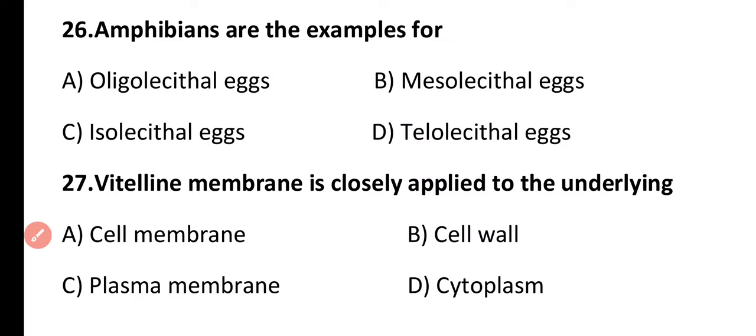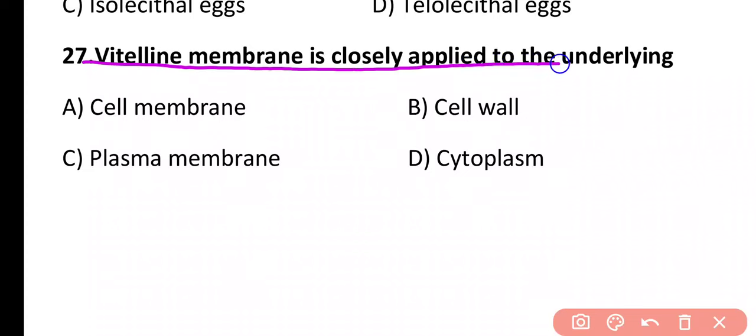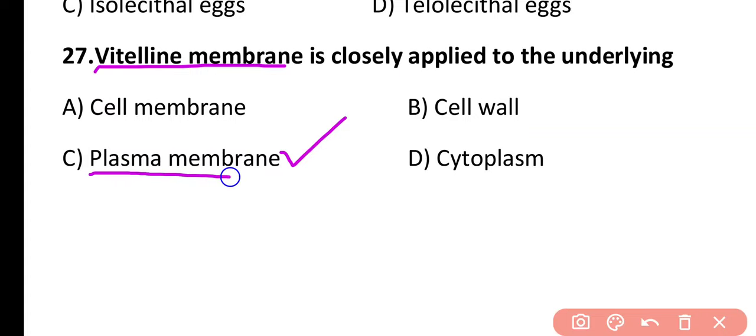Question 27. The vitelline membrane is closely applied to the underlying cell membrane, cell wall, plasma membrane, or cytoplasm? The correct answer is option C. The vitelline membrane is a primary egg membrane that is present outside the plasma membrane of the egg in the case of mollusks, amphibians, as well as birds.